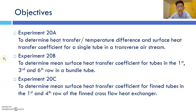For the objectives of this experiment: Experiment 20A is to determine the heat transfer, temperature difference, and surface heat transfer coefficient for a single tube in a transverse air stream. Experiment 20B is to determine the mean surface heat transfer coefficient for tubes in the first, third, and sixth row in a bundle tube. Experiment 20C is to determine the mean surface heat transfer coefficient for fin tubes in the first and fourth row of the Fin Cross-Flow Heat Exchanger.